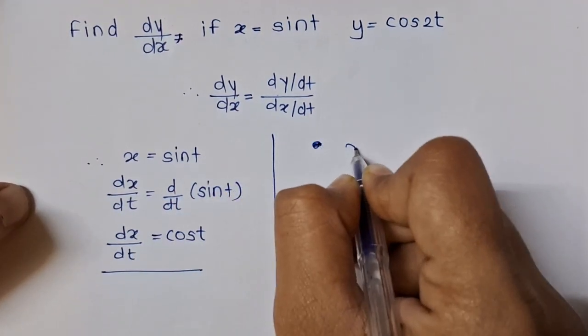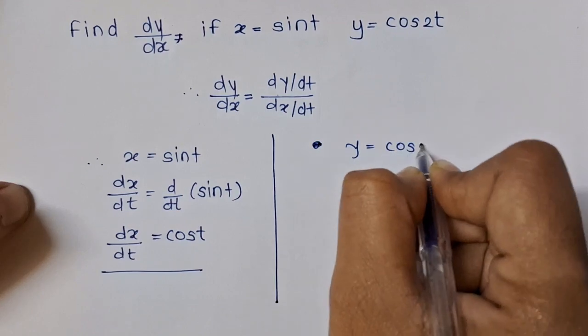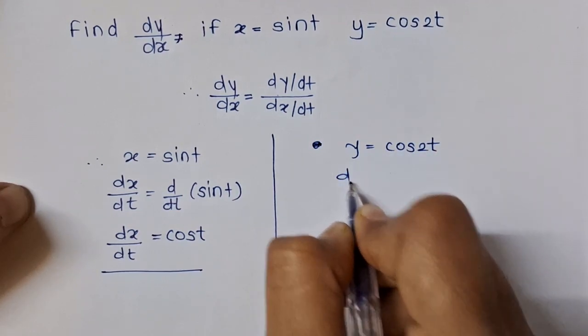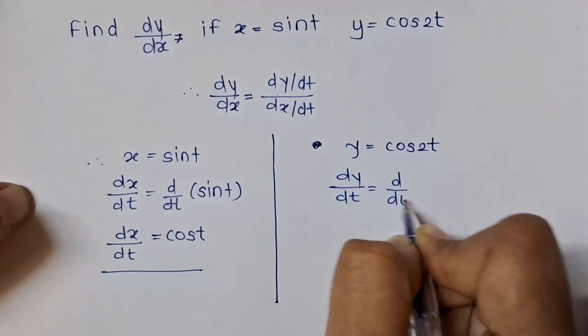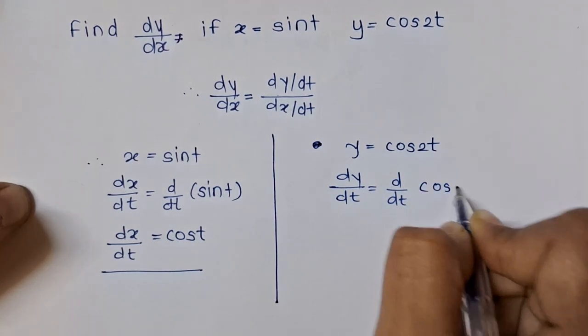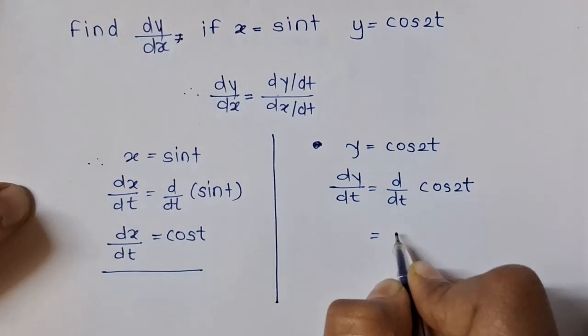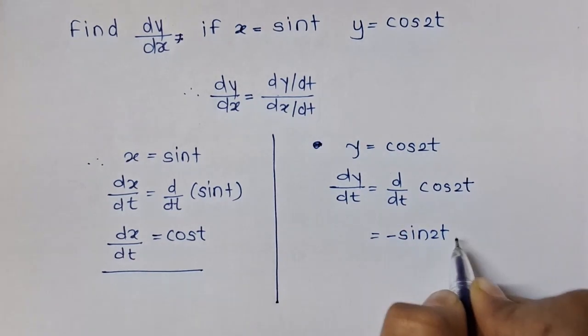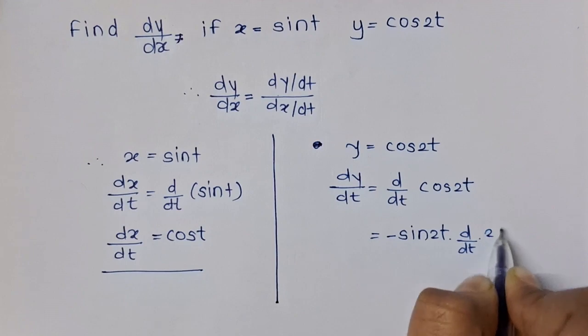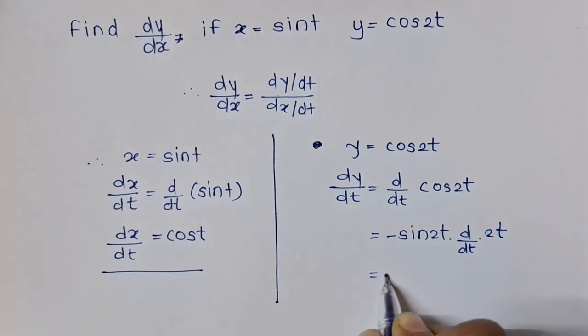Let's find out dy/dt. y is equal to cos 2t, so dy/dt is equal to d/dt of cos 2t. d/dt of cos 2t is minus sin 2t, and using the chain rule we multiply by d/dt of 2t, which is 2.